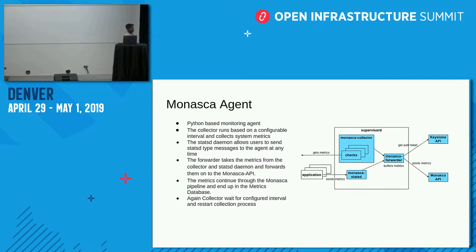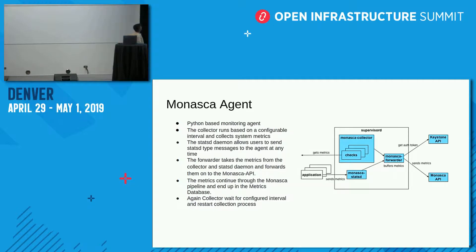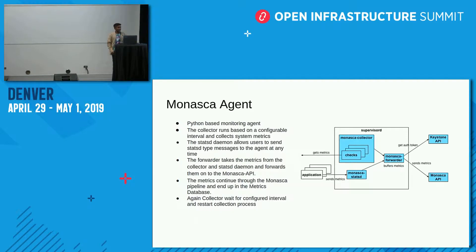The Monasca Agent retrieves metrics from the system and is purely Python-based. It is a combination of Collector, Forwarder, and StatsD. The Collector gathers metrics like CPU and RAM from systems, the Forwarder sends them forward, and StatsD is used for applications. Under Monasca Collector, you can configure the collection interval, such as every 30 seconds.